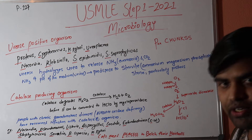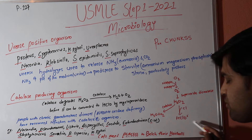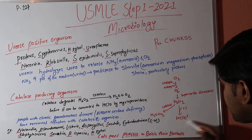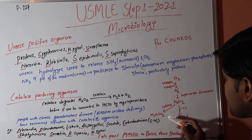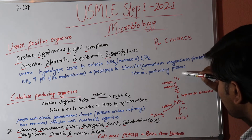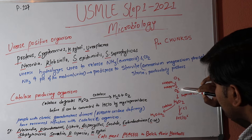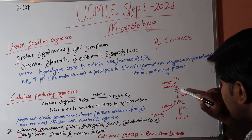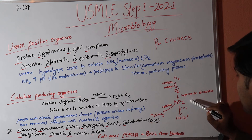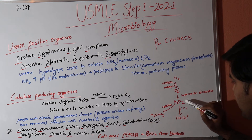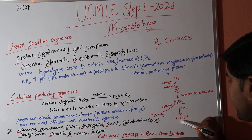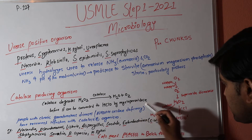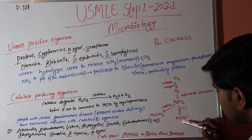In macrophages, a killing pathway produces HOCl (hypochlorite), which is a very powerful bactericidal agent — essentially the bleach we use in disinfection. Inside macrophages, oxygen is converted to superoxide by NADPH oxidase, then superoxide is converted to hydrogen peroxide by superoxide dismutase, and hydrogen peroxide is converted to HOCl by myeloperoxidase in the presence of chlorine.